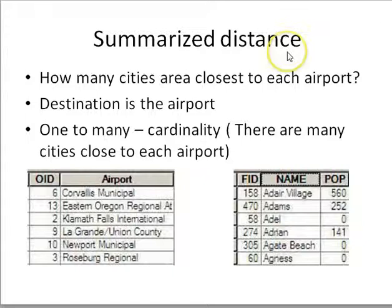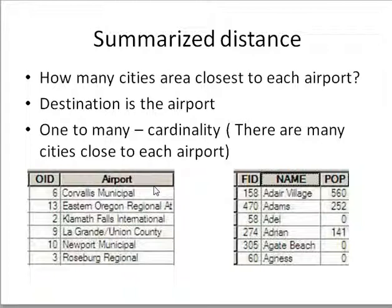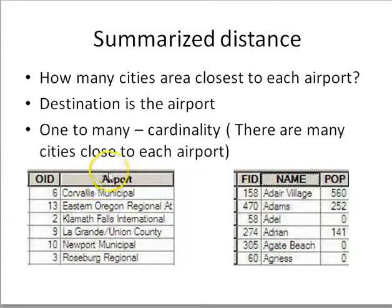A summarized join is used when your cardinality is one-to-many or many-to-many. Going back to the airport example: now I want to know how many cities are closest to each airport. This time the destination is the airport and the source is the cities. There are many cities closest to each airport, so I have a one-to-many cardinality.